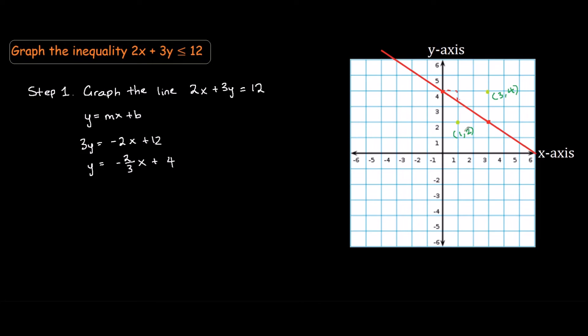If we substitute 1 and 2 into the inequality, it would be 2 times 1 plus 3 times 2, and we check if this is less than or equal to 12. That would be 2 plus 6 is 8, and 8 is less than or equal to 12. So this side we found on our first go is okay, but for this example, I will test the other side to show you guys that that side should not be okay.